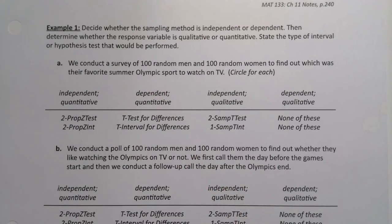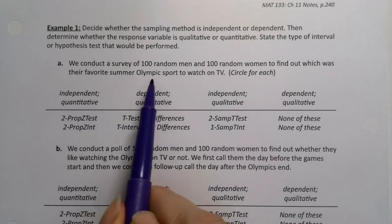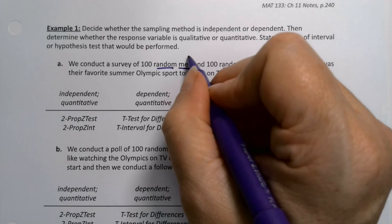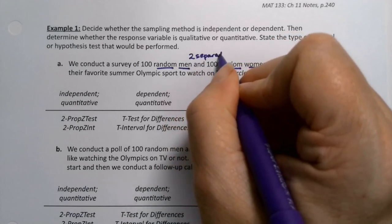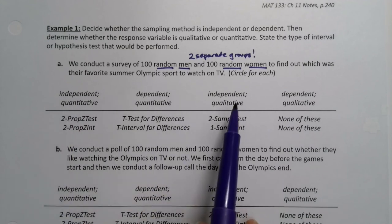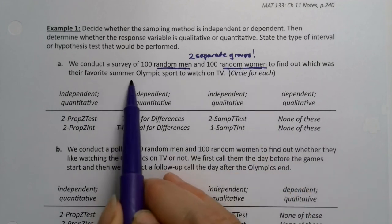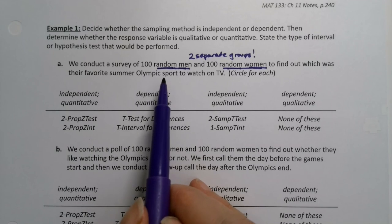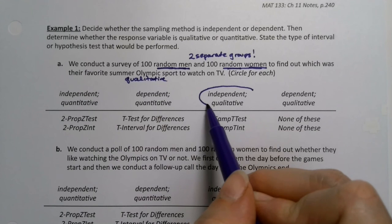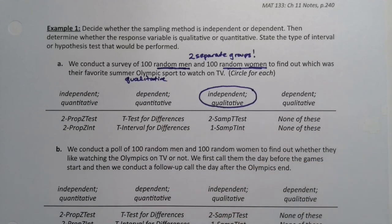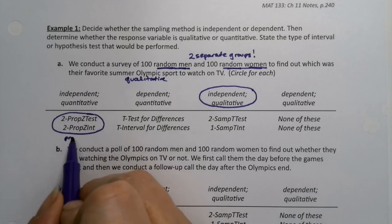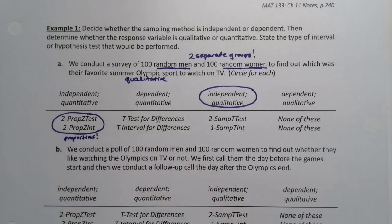Example 1: We conduct a survey of 100 random men and 100 random women to find out their favorite summer Olympic sport to watch on TV. Men and women that are random — these people are unrelated to each other, two separate groups — so it's independent. What we're asking about is their favorite Olympic sport: basketball, swimming, or gymnastics. That's a word, so it's qualitative. It's independent and qualitative, meaning proportions — on a calculator, that's a two-prop Z test and two-prop Z interval.